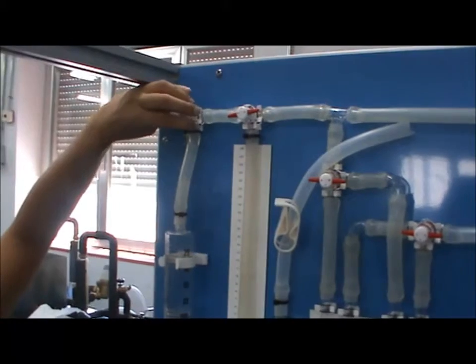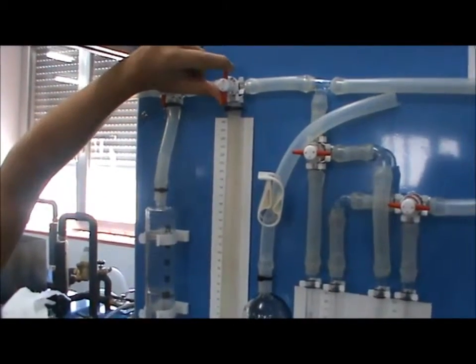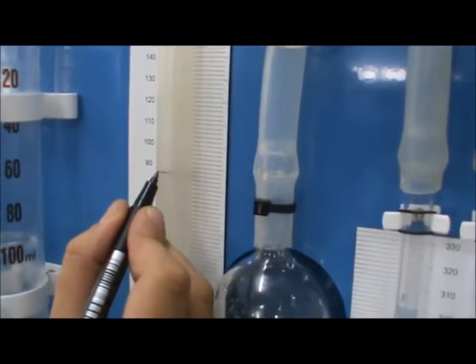Then, quickly open VT3 and VT2, connecting the syringe to the U-shaped vessels. The solution level will drop slightly. Mark the level with a pen when it has stabilized.